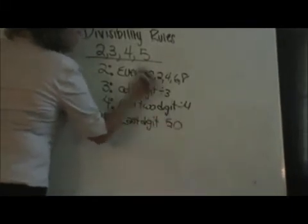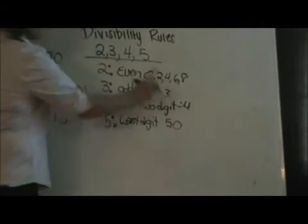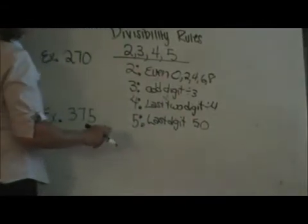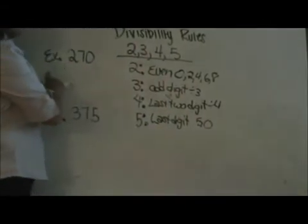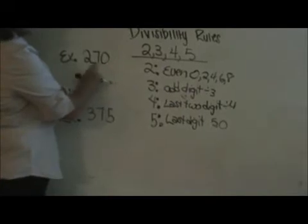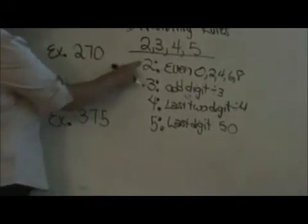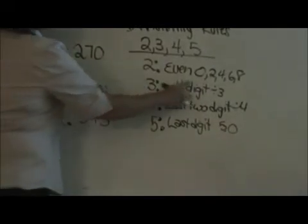A number is divisible by 5 if the last digit is either a 5 or a 0. So those are the rules. Now let's apply those to these examples. Let's start with 270.